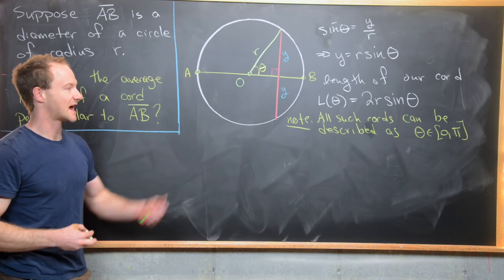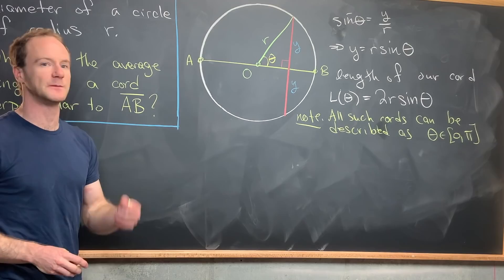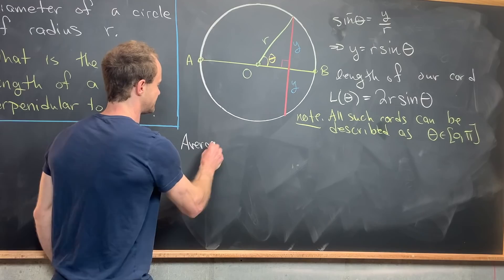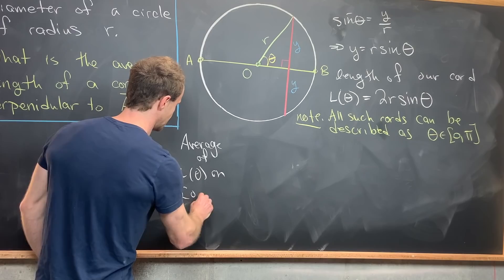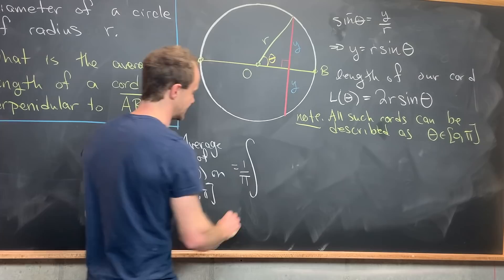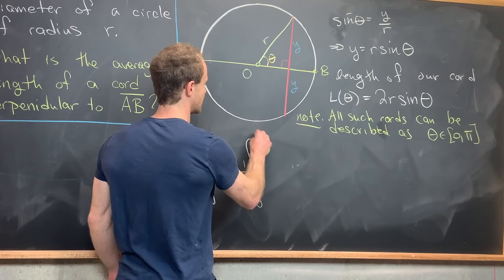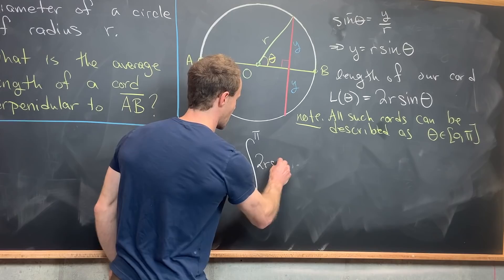Fantastic. Now what we want to do is use a classic result from Calculus 2, and that is the average value of a function. So here we'll have the average of the length of theta on the interval 0 to pi. So that's going to be equal to 1 over the length of that interval. In other words, it'll be 1 over pi. And now we have the integral from 0 to pi of L(θ), but L(θ) is given by this 2R sine theta dθ.